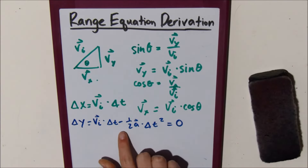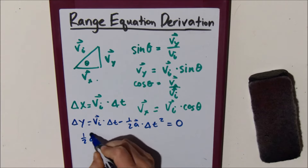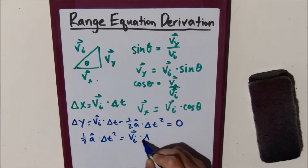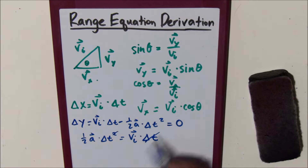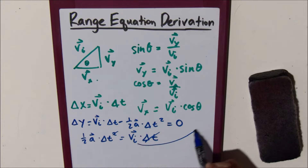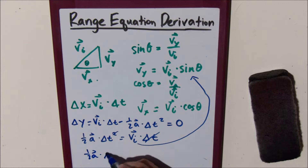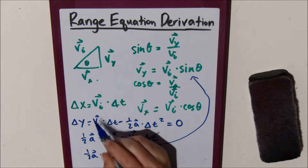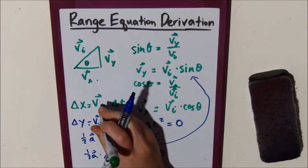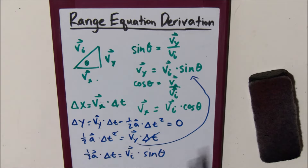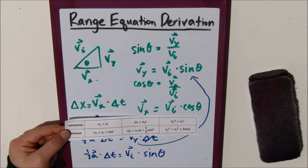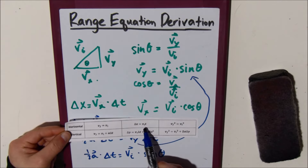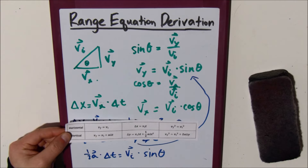Let's add one-half acceleration times delta t squared to both sides: one-half acceleration times delta t squared equals v initial times delta t. Since there's a delta t on both sides, we can divide by that. Then, since we want this in terms of y, we can rewrite v initial as v initial times sine theta, giving us one-half acceleration times delta t equals v initial times sine theta. I should point out that in the horizontal equation it should have been v x, and in the vertical equation it should have been v y, since when you break down the motion equations into their components you focus on the x or y component of velocity, not v initial itself.